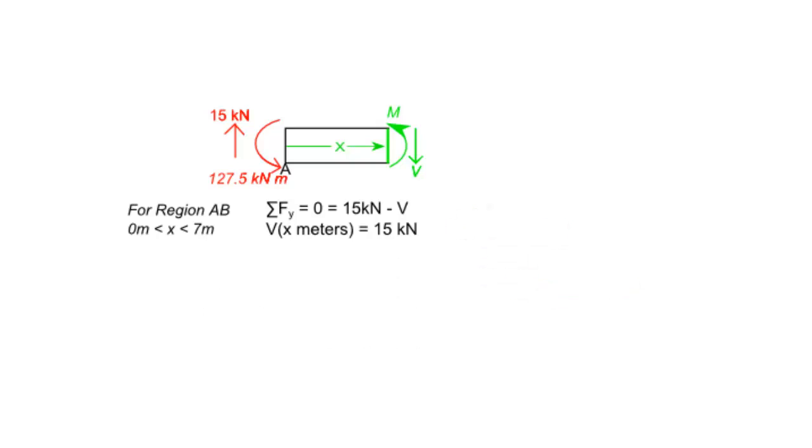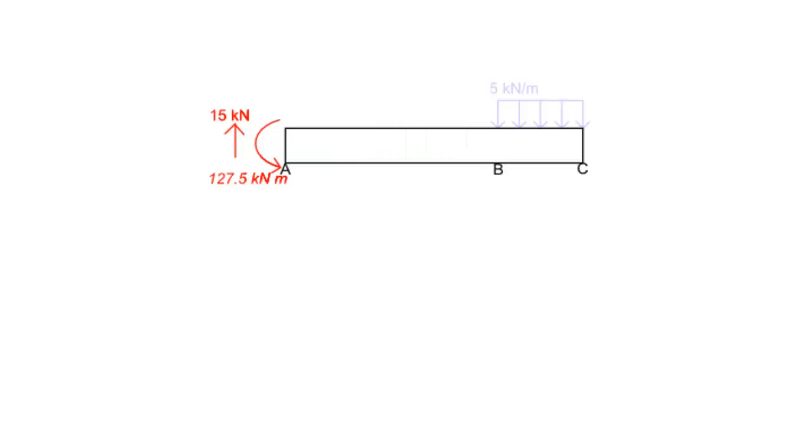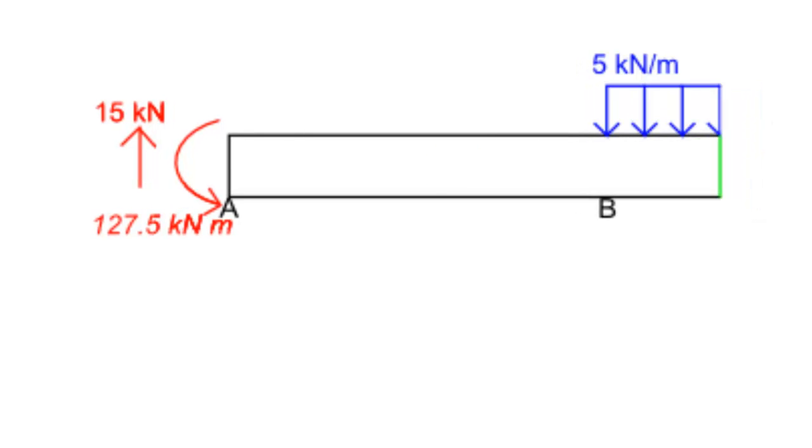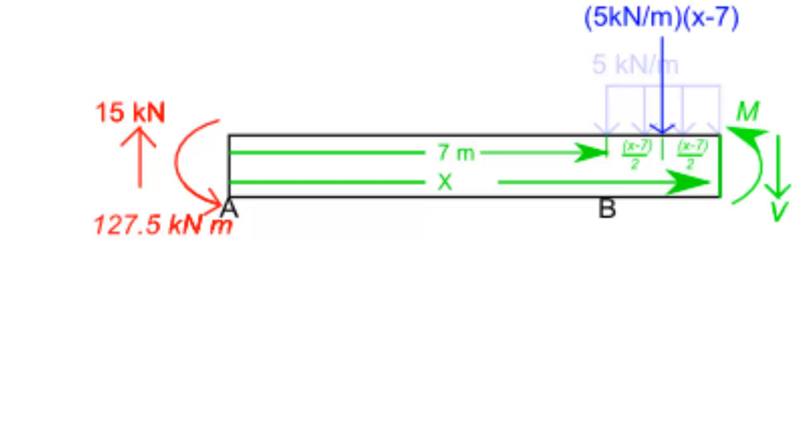Next, we can repeat this process, but this time we'll begin looking at region BC. First, we can place a cut in the middle of region BC that is a distance x from point A. Then we can determine the magnitude of the internal shear force and moment at that point that are required to keep the beam in static equilibrium.